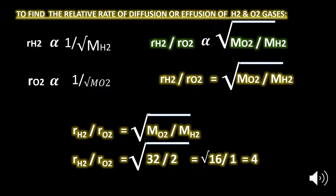Let's prove it. The rate of diffusion of gases is inversely proportional to the square root of the molar masses. The rate of diffusion of hydrogen is inversely proportional to the square root of the molar mass of hydrogen, and the rate of diffusion of oxygen is inversely proportional to the square root of the molar mass of oxygen. Dividing these two equations gives: rate of diffusion of hydrogen over rate of diffusion of oxygen equals the square root of molar mass of oxygen over the square root of molar mass of hydrogen.